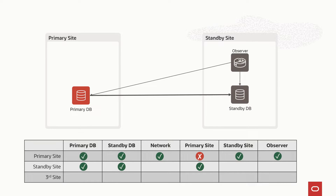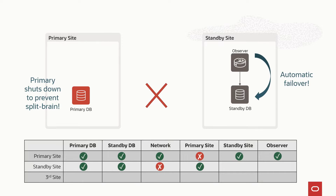Now see carefully what happens if we just lose the connectivity between the primary and the standby site. Two things will happen: the primary database loses the quorum, and to avoid a split-brain condition, the primary database will shut down even if it's still healthy. The observer will not see the primary database anymore, so it will initiate an automatic failover to the standby database. Just because of a network disconnection, the primary shut down and we had a failover. Having network disconnection between the primary and standby site is the most common reason for problems in a highly available environment — this is why having the observer on the standby site is not a good solution.